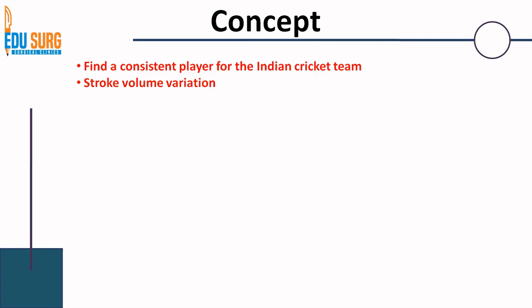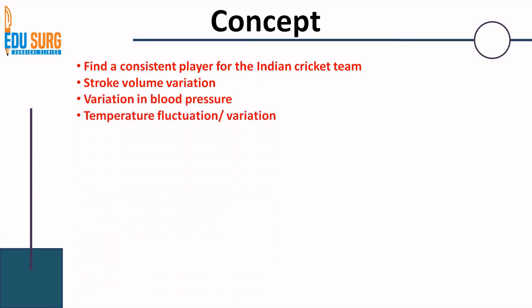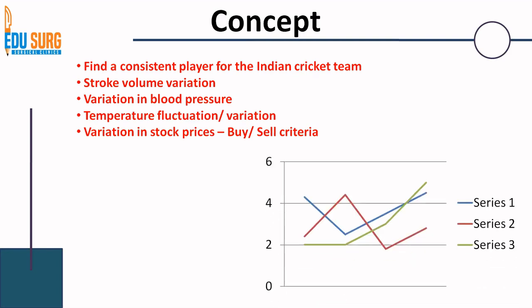In medical terms, consider stroke volume variation, variation in blood pressure, or fluctuation in temperature. All of these are basically variation — standard deviation, dispersion, how you are behaving around the central tendency. Variation in stock prices and buy-or-sell criteria are also based on the concepts of variation, standard deviation, measures of central tendency, and measures of dispersion.